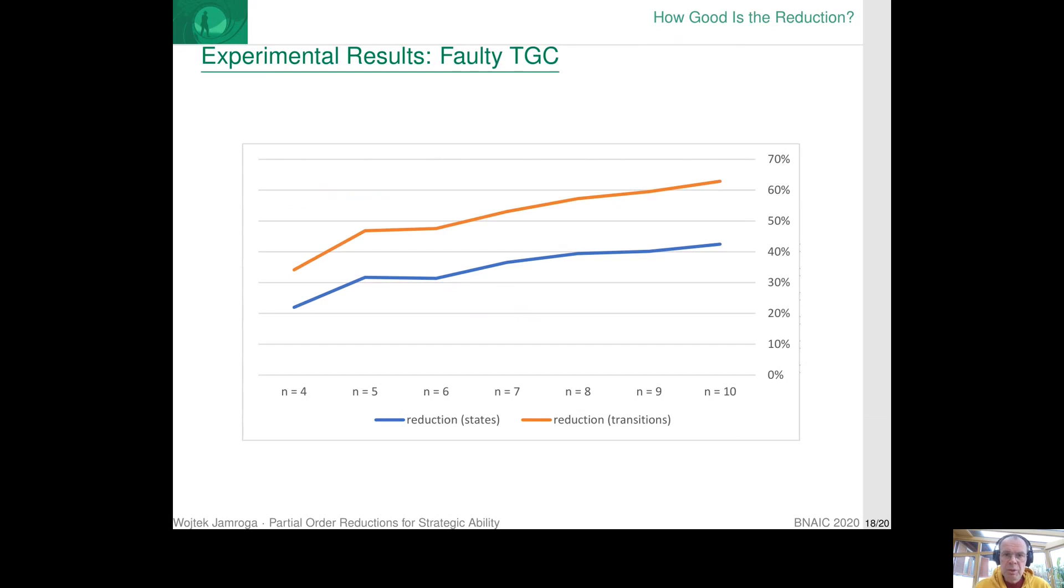We also did some experiments for the variant of TGC, where one of the trains may be faulty and the reductions are not as good here. They are clearly not exponentials, but still definitely worthwhile.